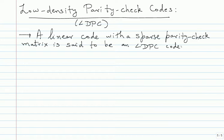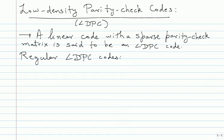This is very different from the usual statements in terms of minimum distance. One such low density parity check matrix construction which has produced reasonably good codes is the regular construction. We will concentrate a lot on regular LDPC codes. Regular LDPC codes are parameterized by three quantities: the block length N, and two weight parameters.